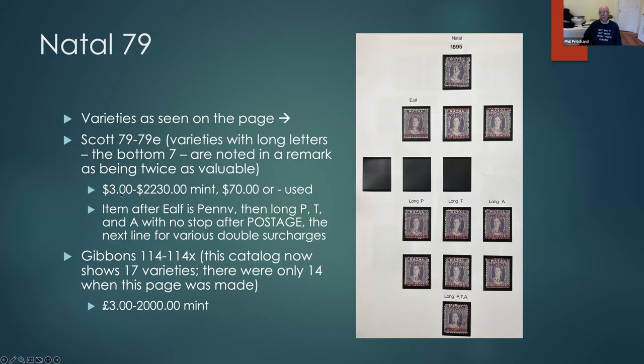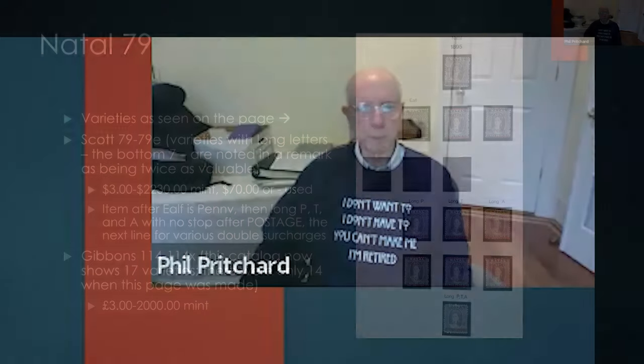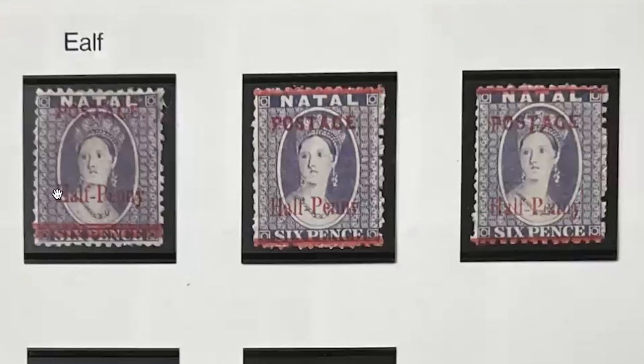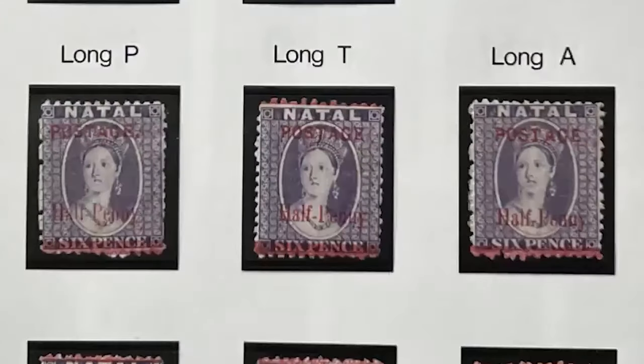Scott says these are twice as valuable as the regular stamp, and prices are quite varied — you can get one mint for three dollars, but others are over two thousand dollars mint. Strangely, in a couple of cases the used stamps are more expensive than mint, obviously because they're scarce. People who bought the sheets at the post office looked for these varieties and kept them, while others just mailed them off and they got lost in time. Here you can clearly see the long 'P,' the long 'T,' and the long 'A'.